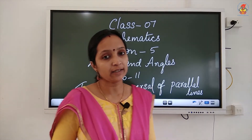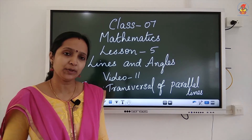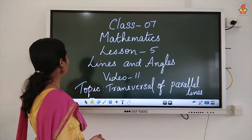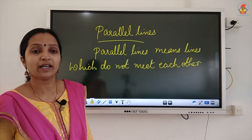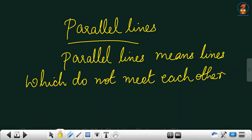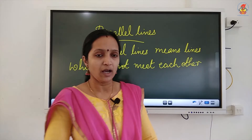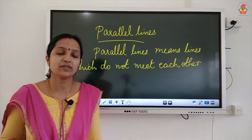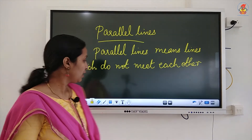We already learned about transversal. Now, what do you mean by parallel lines? Parallel lines means lines which do not meet each other — non-intersecting lines. However far you extend the lines, they will not meet at any point.